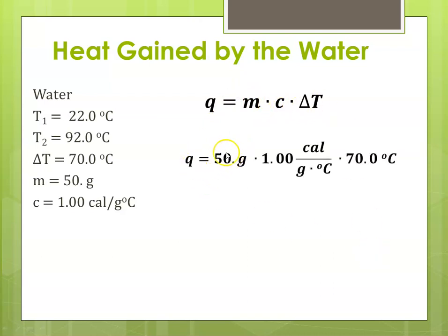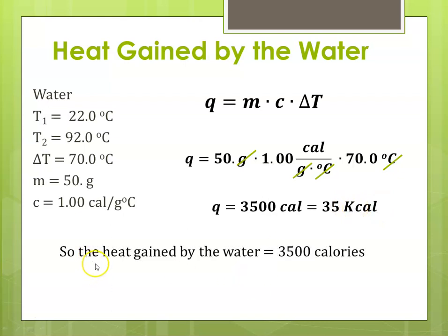So here our Q is our M, which was 50 grams, our C, which is 1 calorie per gram degree C, and our delta T was 70 degrees C. Grams is going to cancel out, degrees C is going to cancel out, and that leaves us with our Q that comes out to 3,500 calories. Now, if we wanted to convert to food calories, that would be 35 kilocalories, because a food calorie is a kilocalorie. So, the heat that was gained by the water from burning the food underneath it was 3,500 calories, and we're going to keep with regular calories.